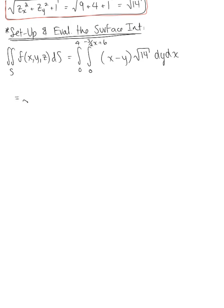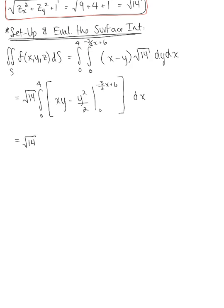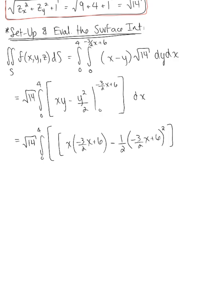Factoring out the square root of 14 and integrating with respect to Y, we get X times Y minus Y squared over 2, evaluated from 0 to (negative 3 halves X plus 6) dX. Plugging in the bounds, we have the square root of 14 times the integral from 0 to 4 of X times (negative 3 halves X plus 6) minus one half times (negative 3 halves X plus 6) squared dX. When we plug in 0, everything disappears.